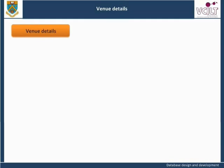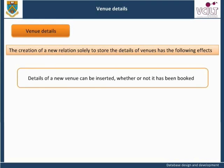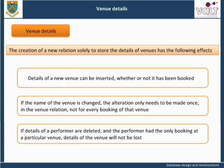Venue Details: The creation of a new relation solely to store the details of venues has the following effects, which resolve the problems identified with the single relation in first normal form. Details of a new venue can be inserted whether or not it has been booked. If the name of the venue is changed, the alteration only needs to be made once in the venue relation, not for every booking of that venue. If details of a performer are deleted and the performer had the only booking at a particular venue, details of the venue will not be lost.